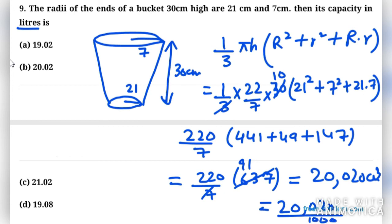So you get 20.02 litres. The right option is B, that is 20.02.